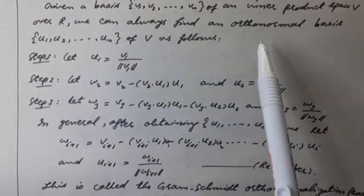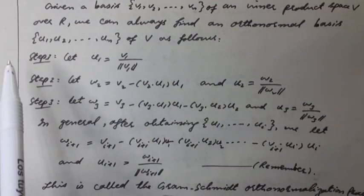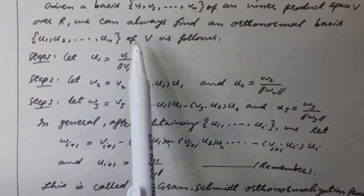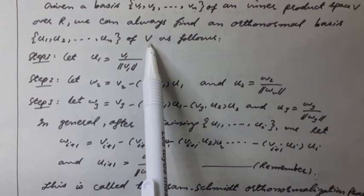we can always find an orthonormal basis U1, U2, ..., Un of the inner product space V as follows.